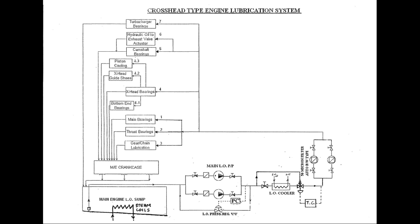For gear case in Sulzer and other engines, and chain case in MAN B&W engines, lube oil spray nozzles are provided to spray pressurized lube oil directly onto the loaded portion of the machine gears and chain sprockets. Oil is also supplied in the form of spray to the tilting pad type thrust bearing.